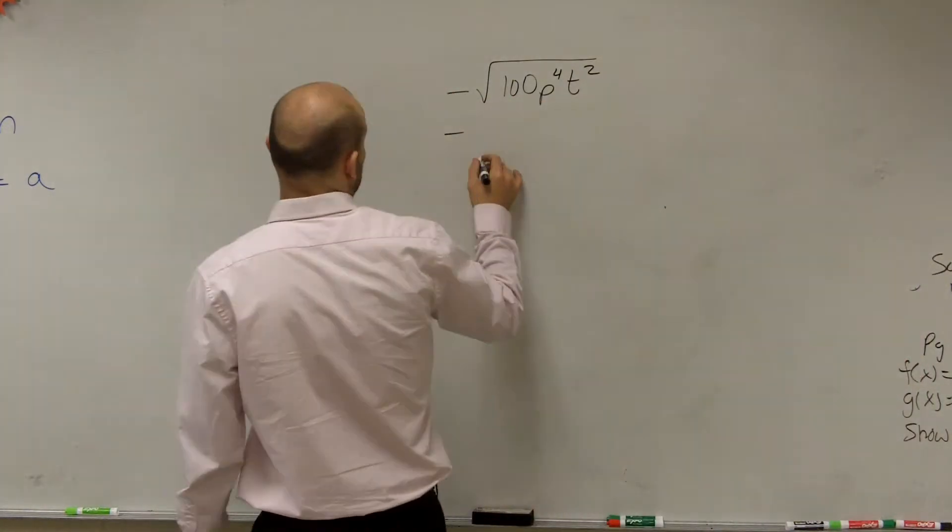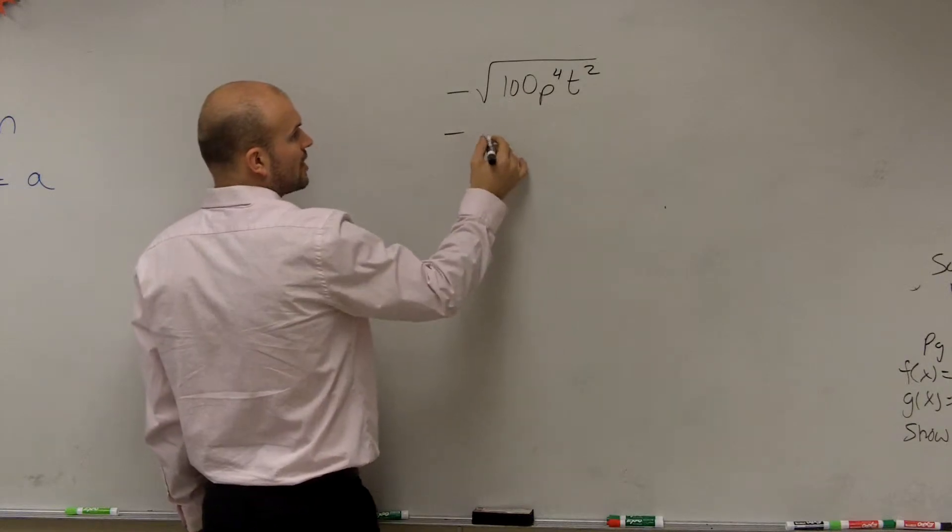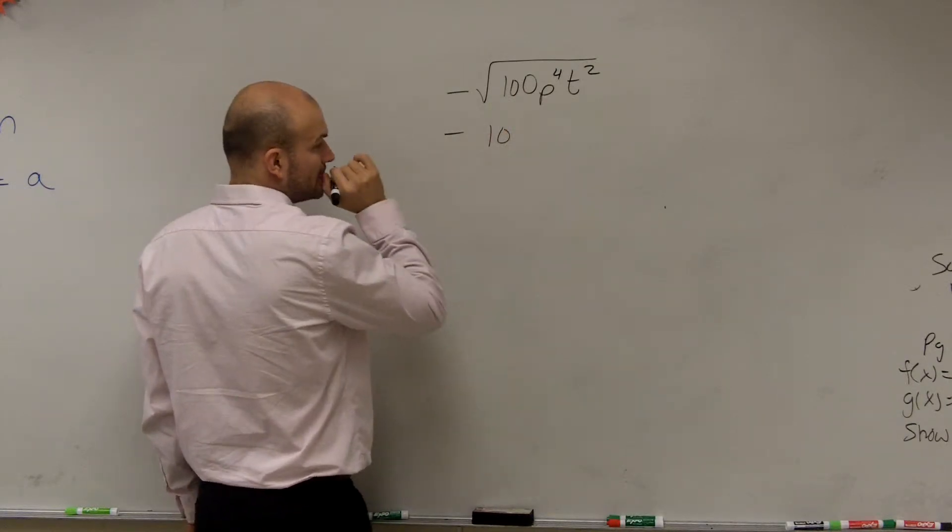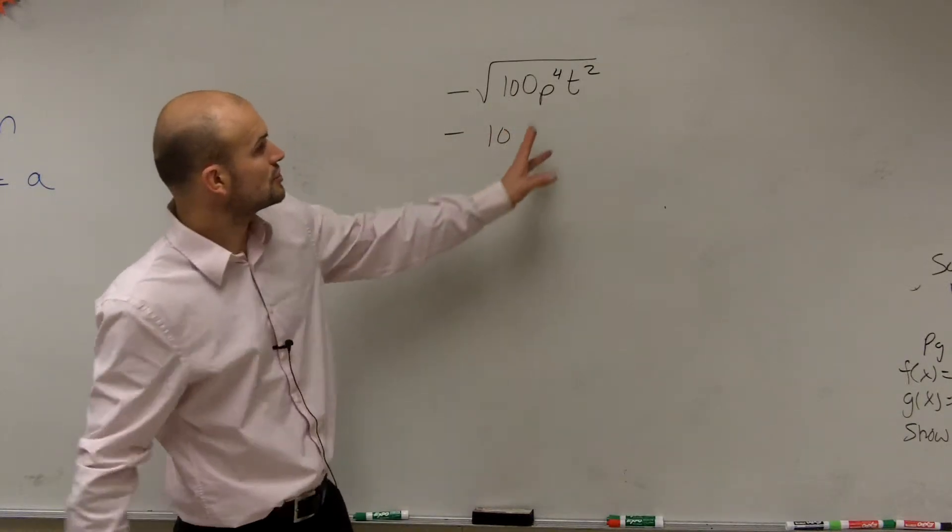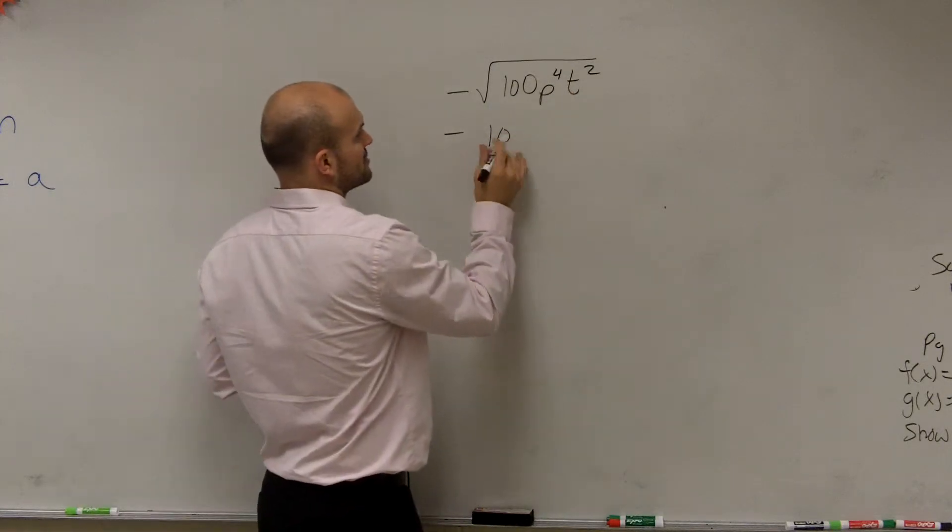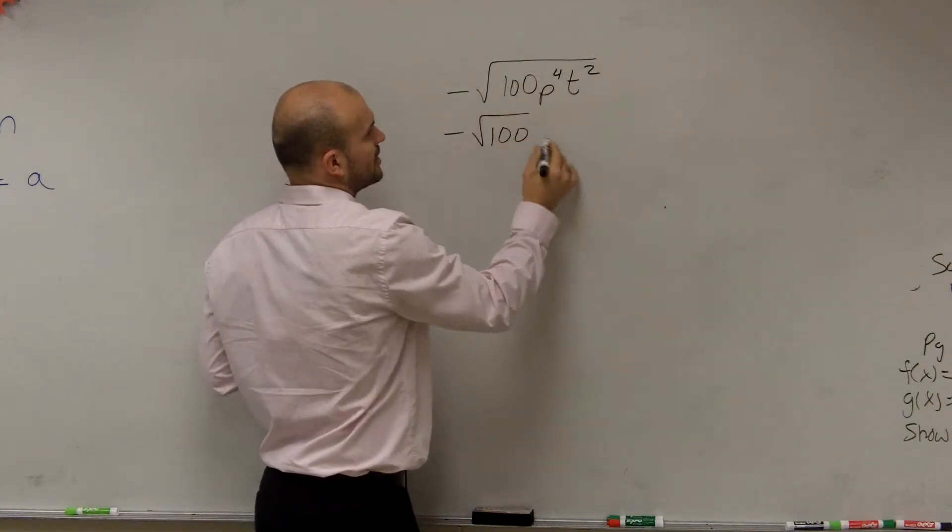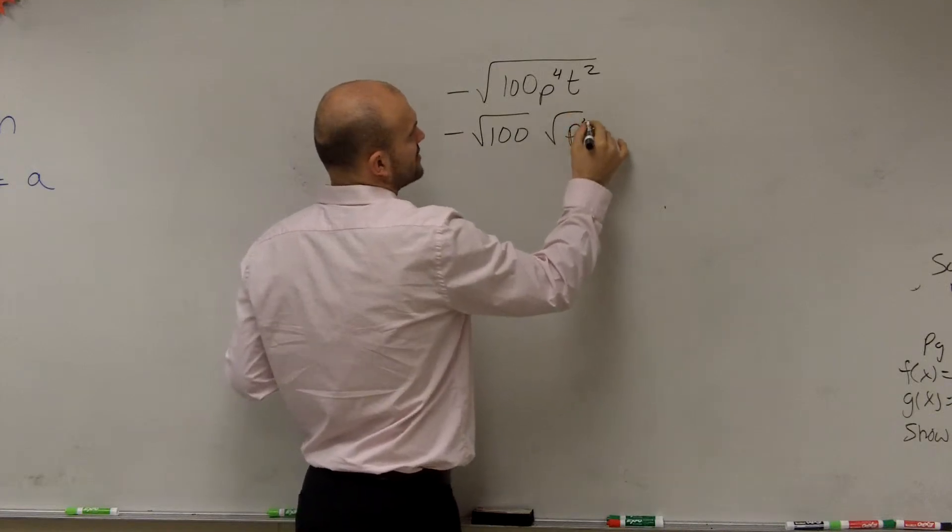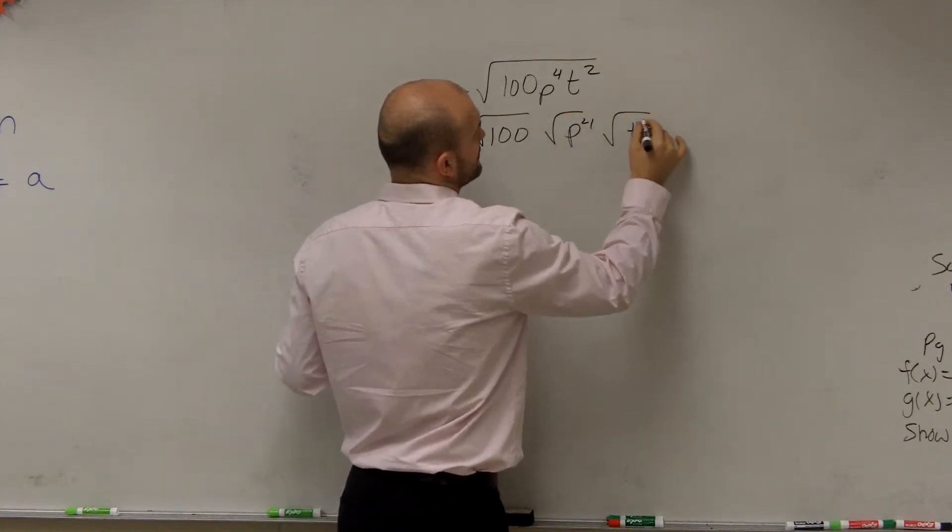So I'll have square root. Square root of 100 is going to be 10. The square root of p to the 4th, let's write this like this. Let's split it up: square root of p to the 4th and the square root of t squared.